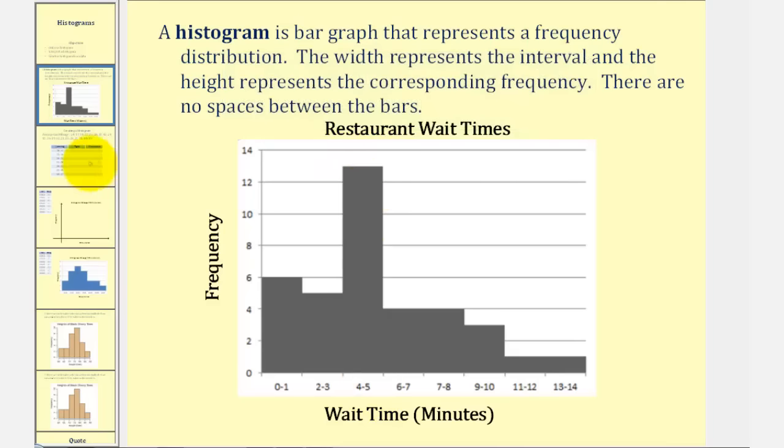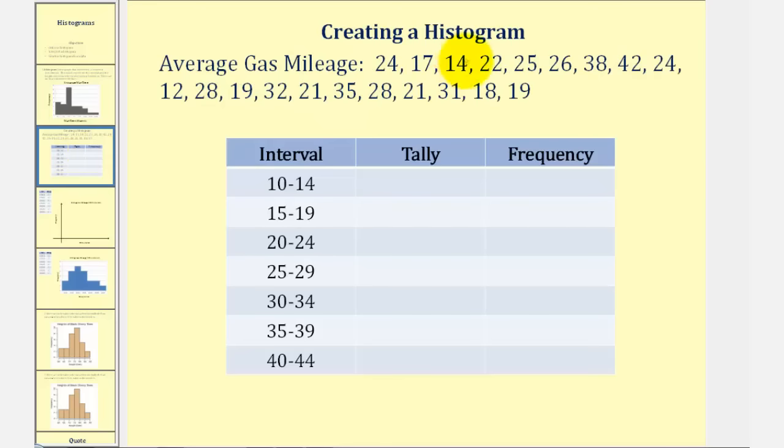Now let's construct our own histogram. Here we're given data on average gas mileage of twenty cars. So before we create the histogram, we'll complete this frequency table where we already set up the intervals. Once again, notice how they have the same width of the same size, and there are seven intervals here, but we can say we have seven bins. So we'll first go through and tally the data in the correct interval, and then find the frequency.